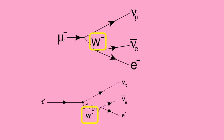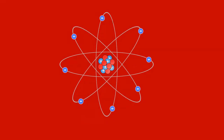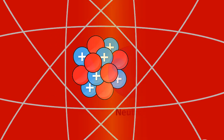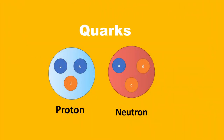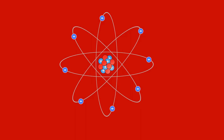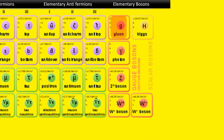The weak force responsible for this decay is carried by W bosons. The nucleus of an atom contains protons and neutrons. Protons and neutrons are made up of quarks. A proton contains two up quarks and one down quark. A neutron is made up of two down quarks and one up quark. The nucleus is held together by a strong nuclear force. Elementary particles called gluons carry this force.